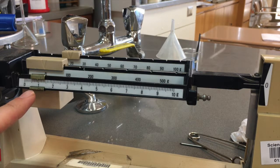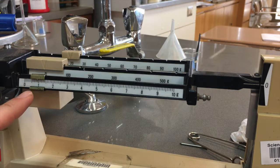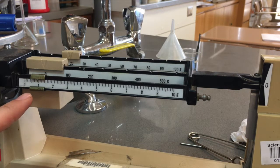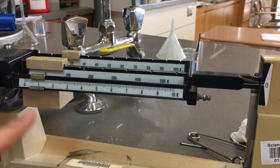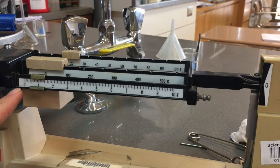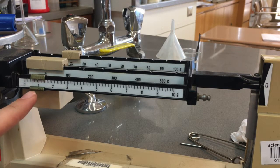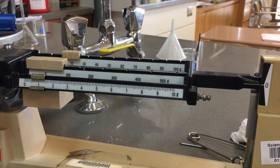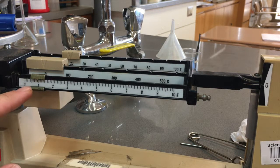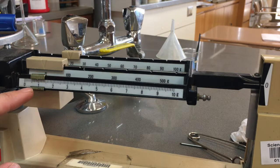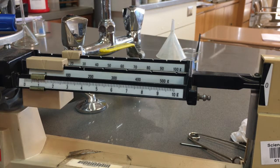So we've got 20, and then we've got something between 0.9 and 1. So I'm going to say 20.9, and then I'm going to guess 7 there.